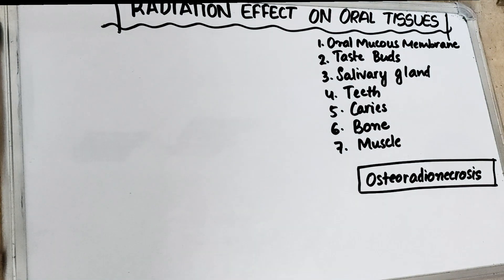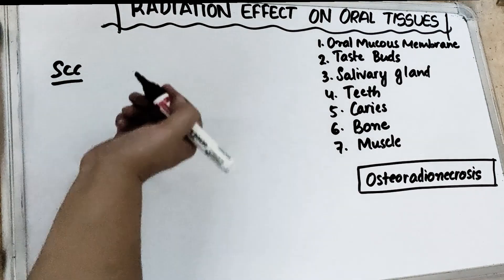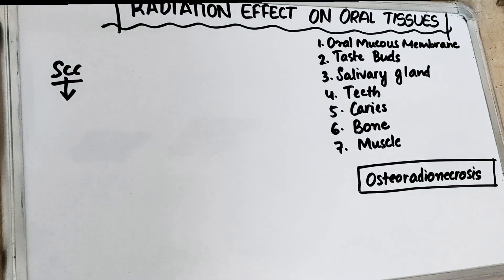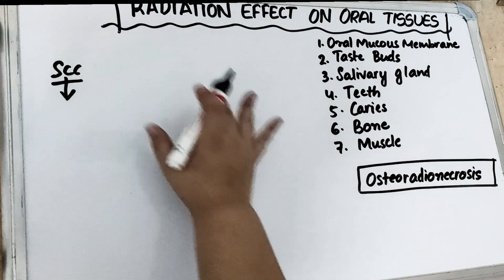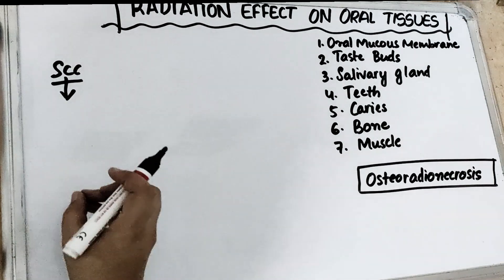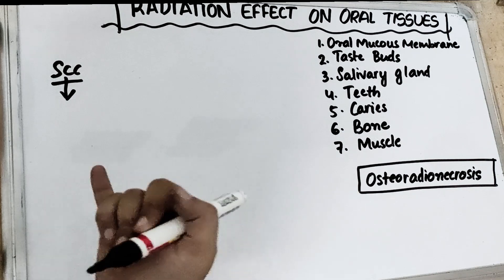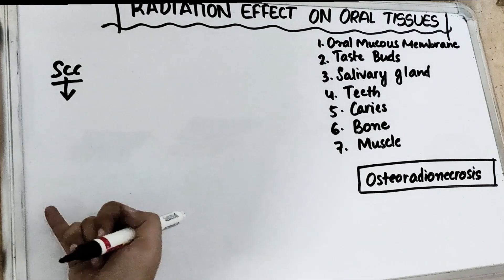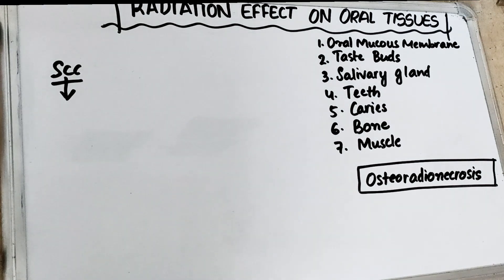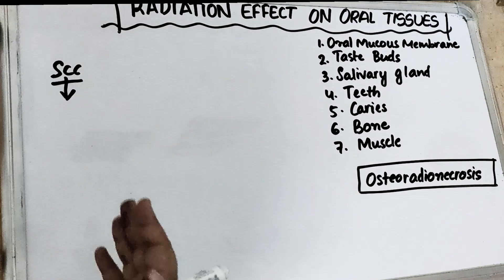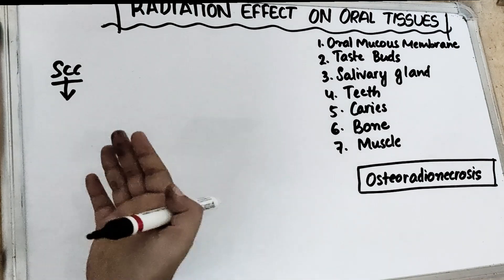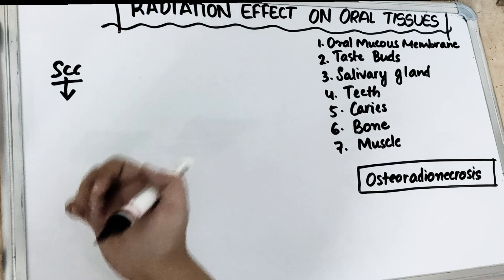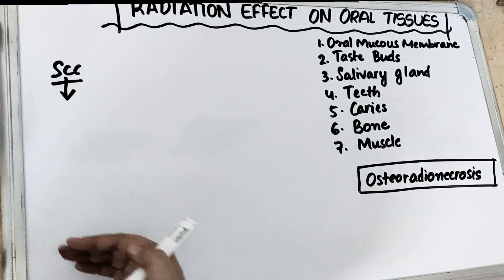The most common carcinoma is squamous cell carcinoma. Radiotherapy cannot be given to all cancers — we need to see whether the lesion is malignant and whether radiosensitive cells are involved. Radiosensitive cells will be affected by radiation therapy, while radioresistant cells will not. All basal cells are the most radiosensitive cells.